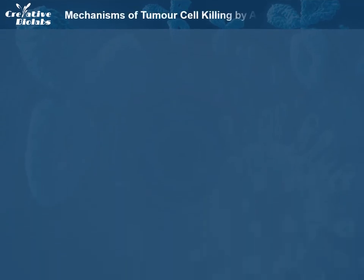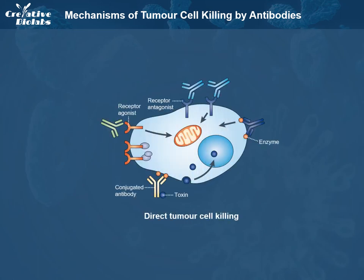Tumor cell killing by antibodies can be summarized as being due to several mechanisms. Direct tumor cell killing can be elicited by receptor agonist activity, such as an antibody binding to a tumor cell surface receptor and activating it, leading to apoptosis. It can also be mediated by receptor antagonist activity, such as an antibody binding to a cell surface receptor and blocking dimerization, kinase activation, and downstream signaling, leading to reduced proliferation and apoptosis.